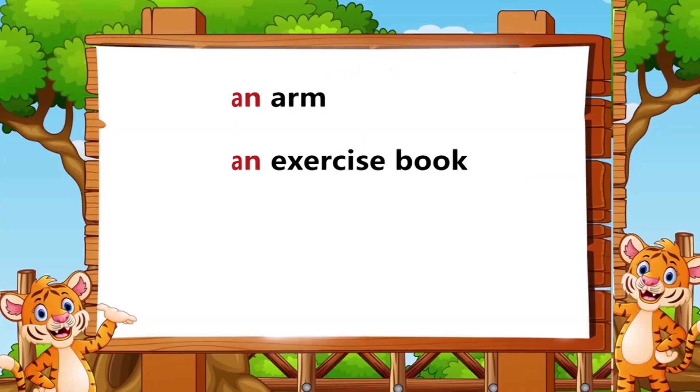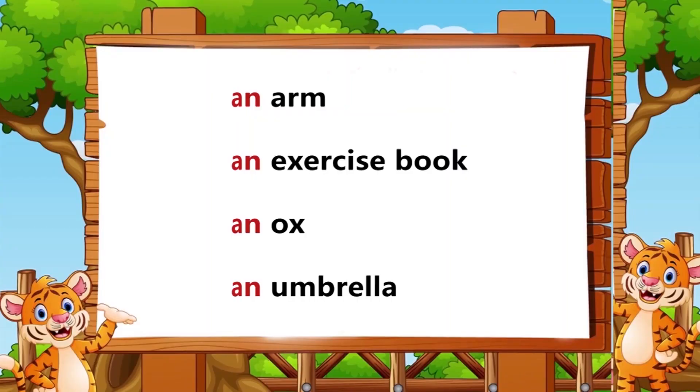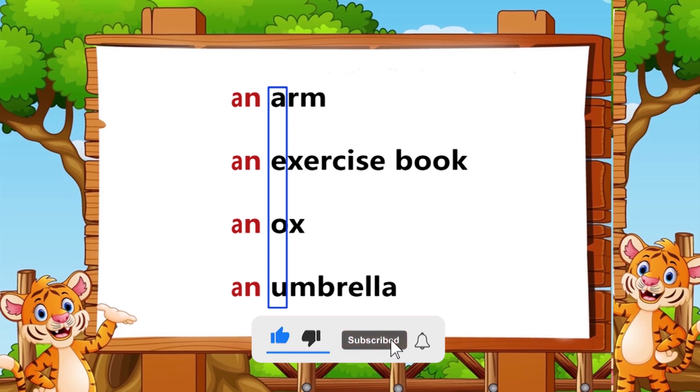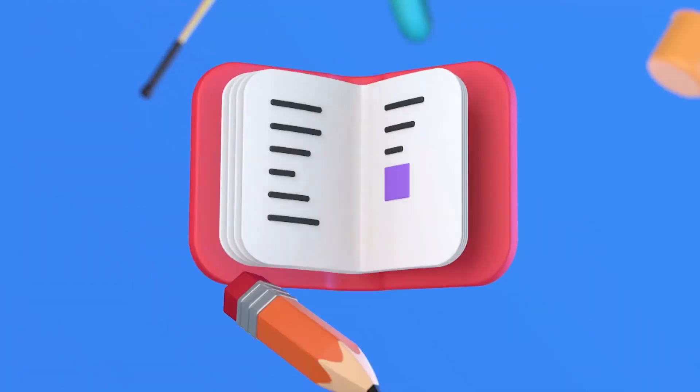If you say an arm, an exercise book, an ox, an umbrella, you're right. Look here, words like exercise book, ox, and umbrella begin with vowel sounds.